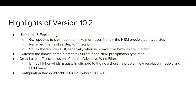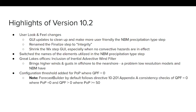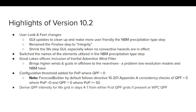A configuration threshold has been added for POP where QPF equals zero. This comes from feedback requesting the ability to have QPF equal to zero where POP is 15. Forecast Builder will strictly follow directive 10-201 Appendix A, which states that the only consistency checks are QPF=0 where POP=0, and QPF greater than zero where POP is greater than 50.